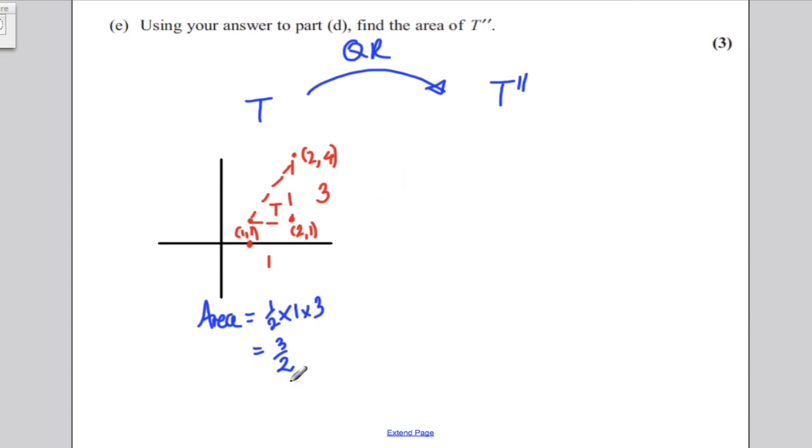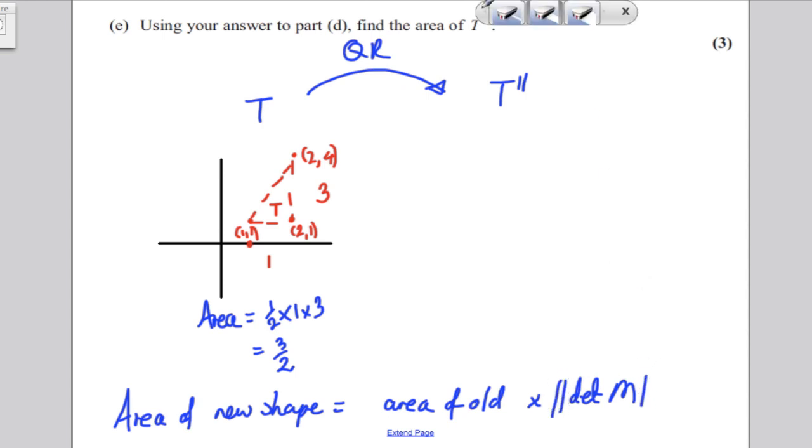Okay, now, we should know this formula, that the area of new shape, new transformed shape, is the area of the old multiplied by the determinant of the matrix that transforms between new and old. Now, the determinant of, or the modulus of this, the positive of this, okay, the positive of that.